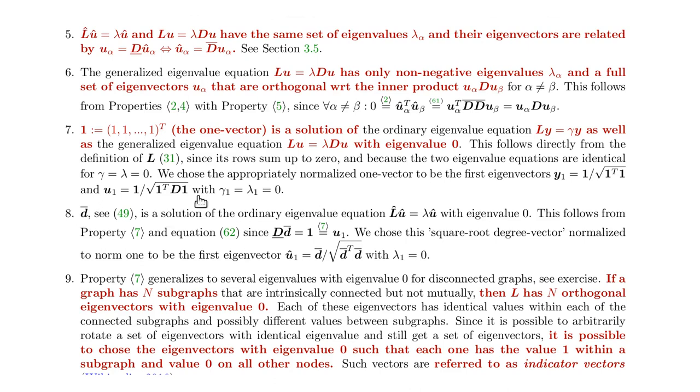Now this simply follows from the fact that the one, one, one, one vector is an eigenvector of this one and because of this relationship here, rather this relationship.